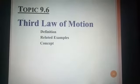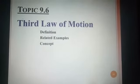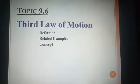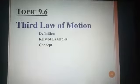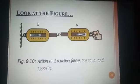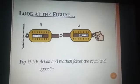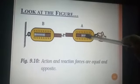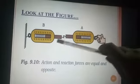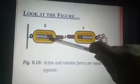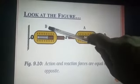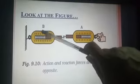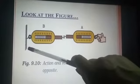Topic 9.6: Third Law of Motion. We have a definition, related examples, and then the concept behind the third law of motion. Look at this figure — we have a hand, and then spring balance A and spring balance B. B is connected with the wall.